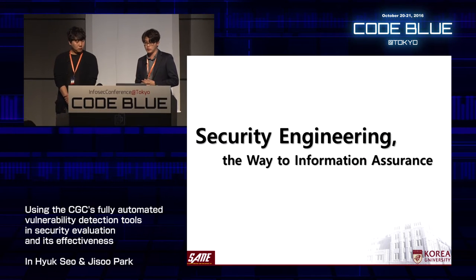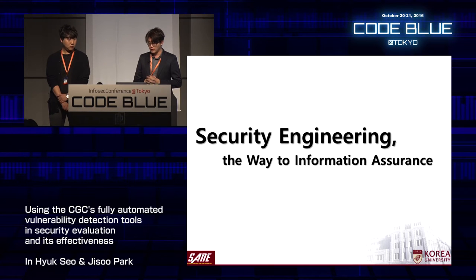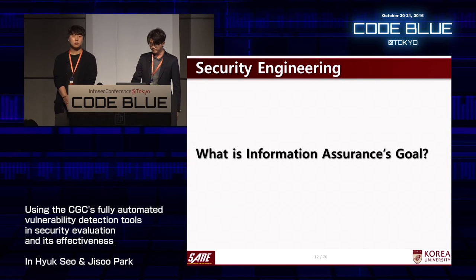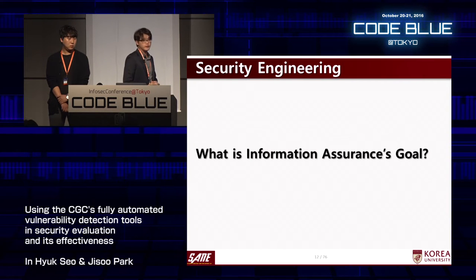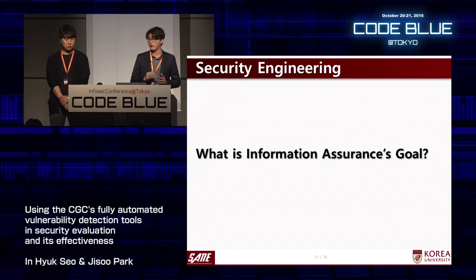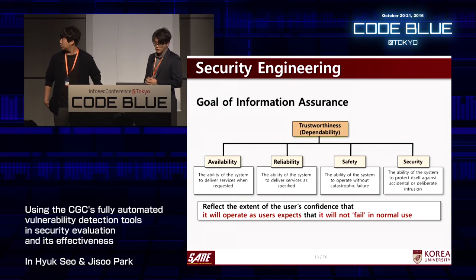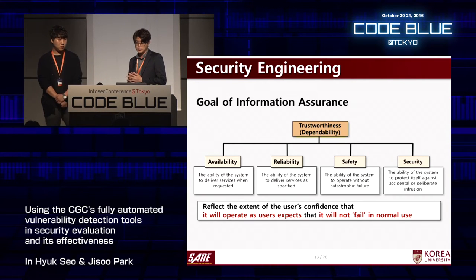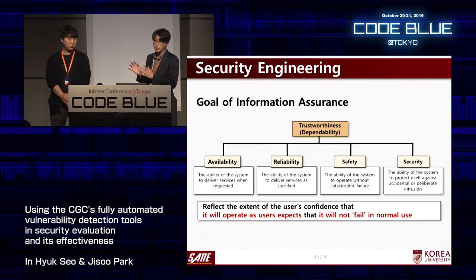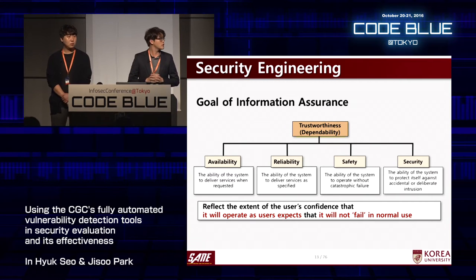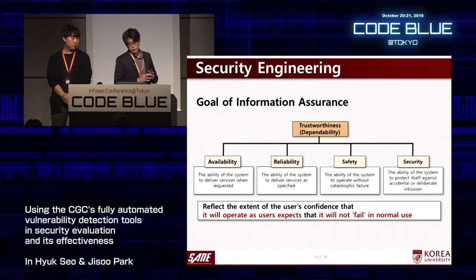How can you achieve information assurance? Information assurance means the system remains dependable against hackers' attacks or during emergencies like natural disasters. The dependability of a system reflects the user's degree of trust — the confidence that it will operate as expected and will not fail in normal use. For dependability, there are four properties: availability, reliability, safety, and security.